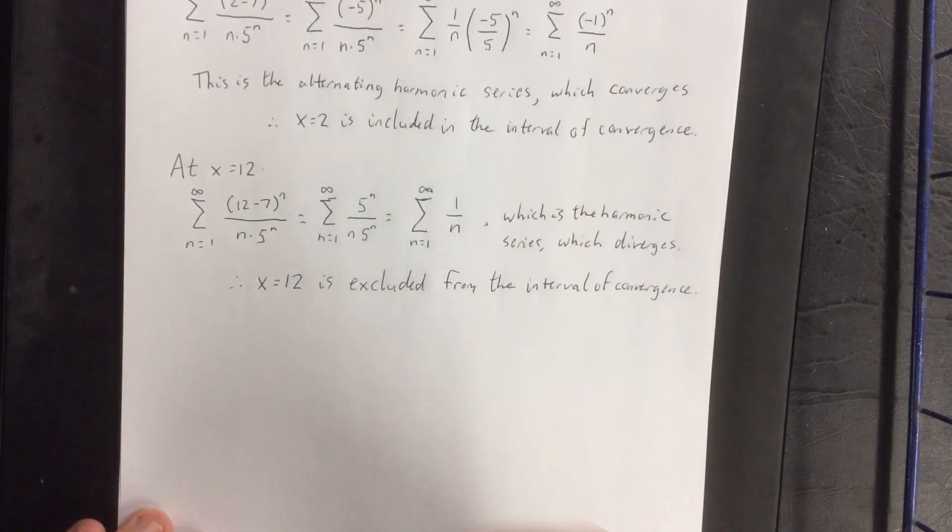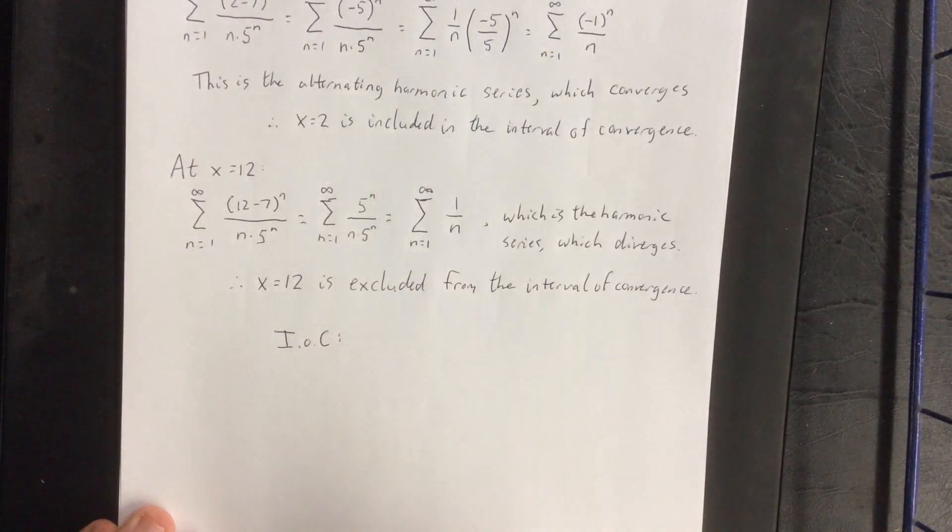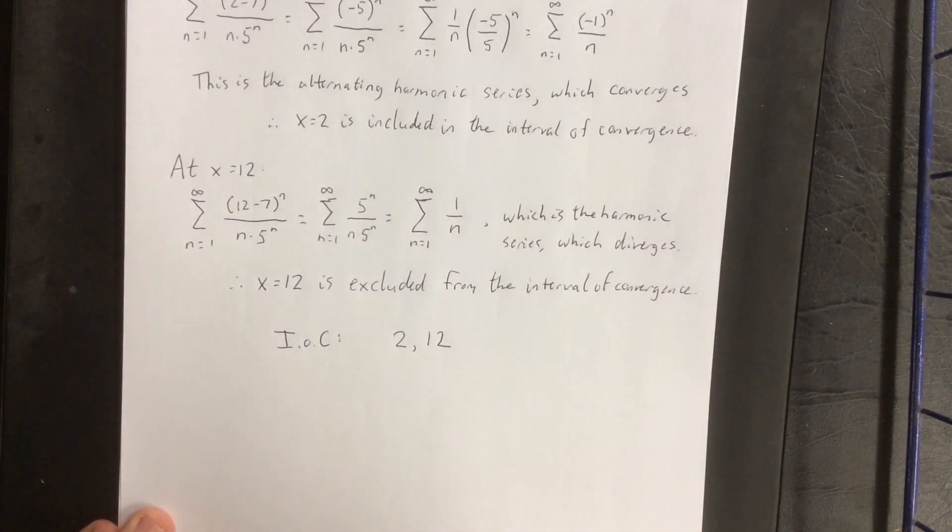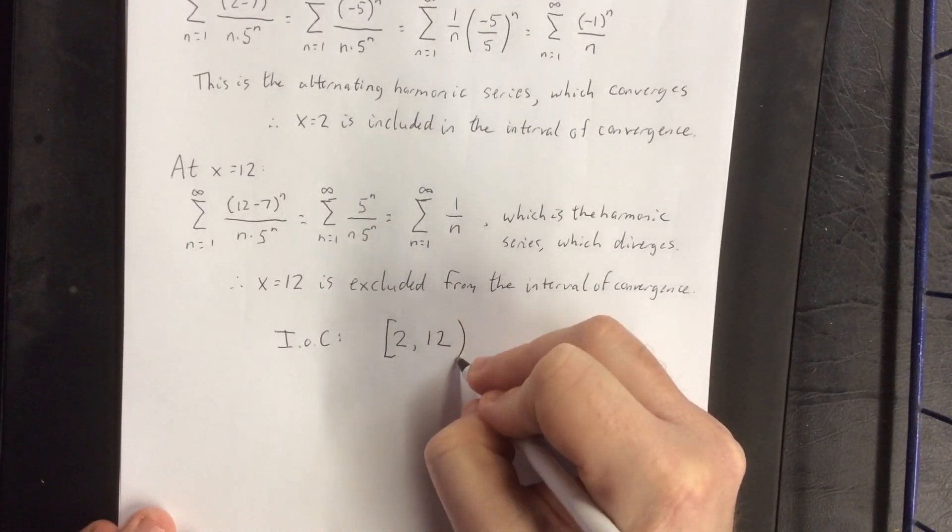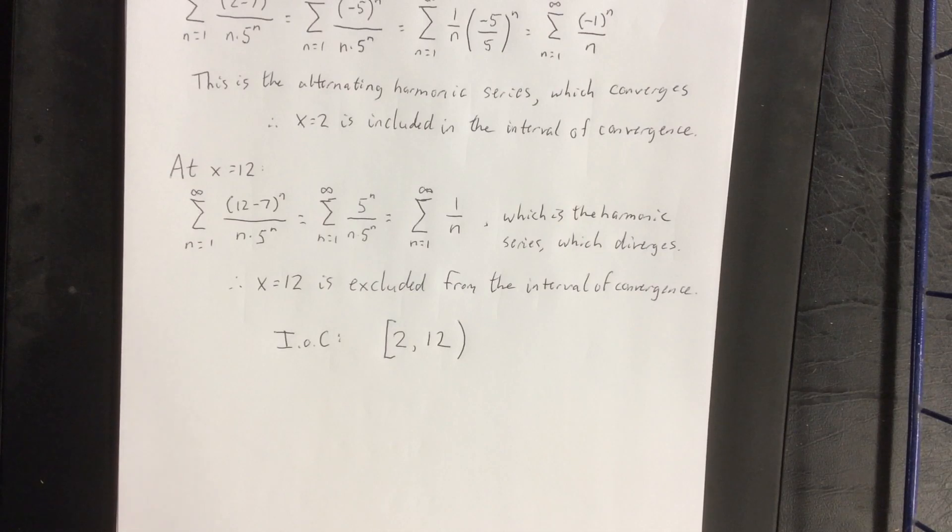As a result, final answer for our interval of convergence. The initial interval of convergence went from 2 to 12. We are including 2, and we are excluding 12. So a final answer for the interval of convergence will look just like this.